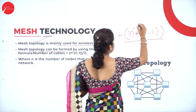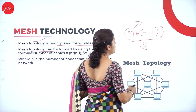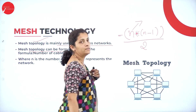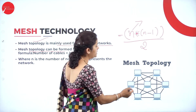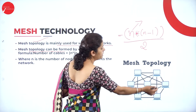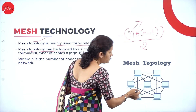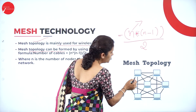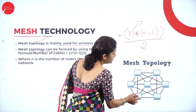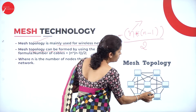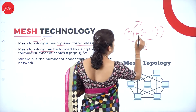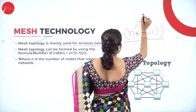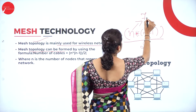In the formula, N represents the number of computer systems. For example, if we have computers 1, 2, 3, 4, 5, 6, and 7, then N is 7.